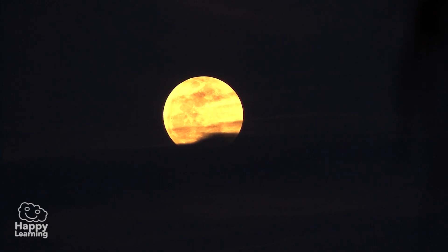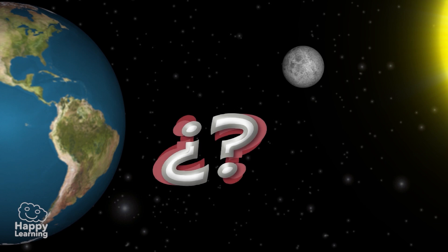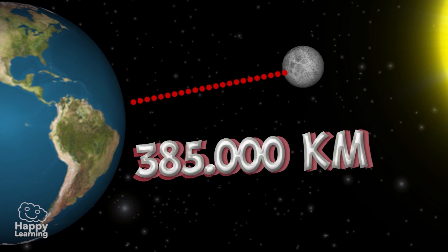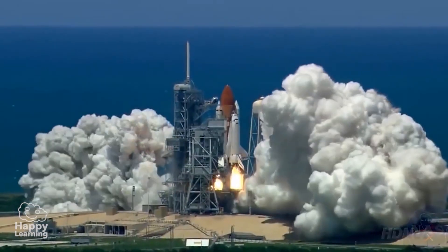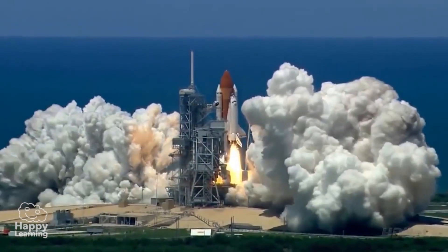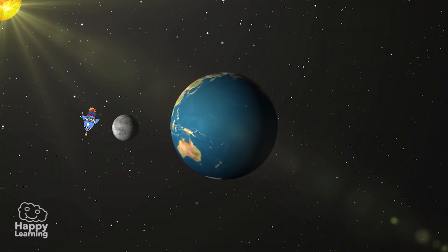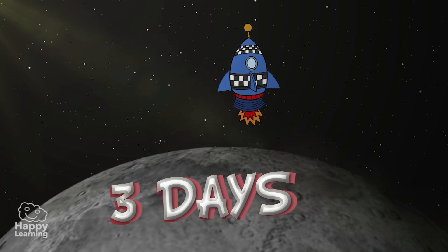Now we are going to learn a few facts about the Moon. Do you know the distance between the Moon and the Earth? Although it looks as if it is not very far away, the Moon is about 385,000 kilometers from the Earth. Another very interesting fact is that a rocket takes three days to get to the Moon.